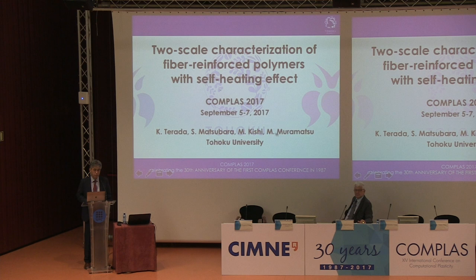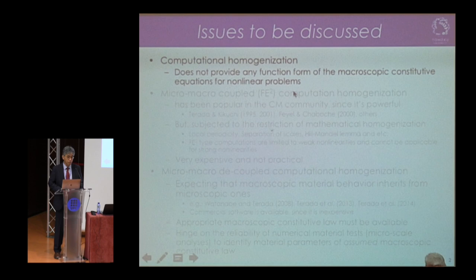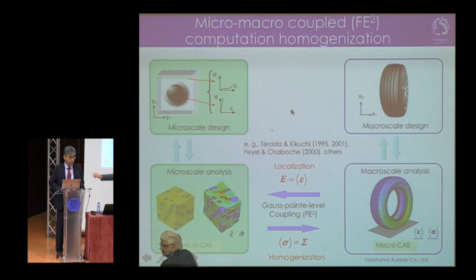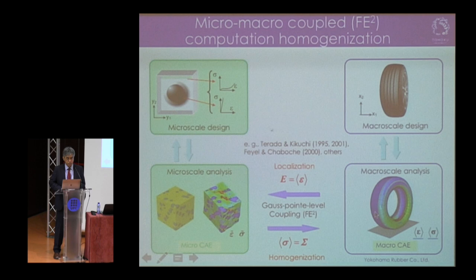Let's get started with this slide. As you know, computational homogenization does not provide any functional form of the macroscopic constitutive equation, especially for nonlinear problems. The micro-macro coupled approach — the FE-square-type computation — is very popular in the field of computational mechanics, because we don't need to have an explicit functional form of the macroscopic constitutive equation. Instead, we just perform the microscopic analysis at each integration point of the macroscopic finite element model. Localization and homogenization formulas are utilized to relate the macroscopic and microscopic field variables.